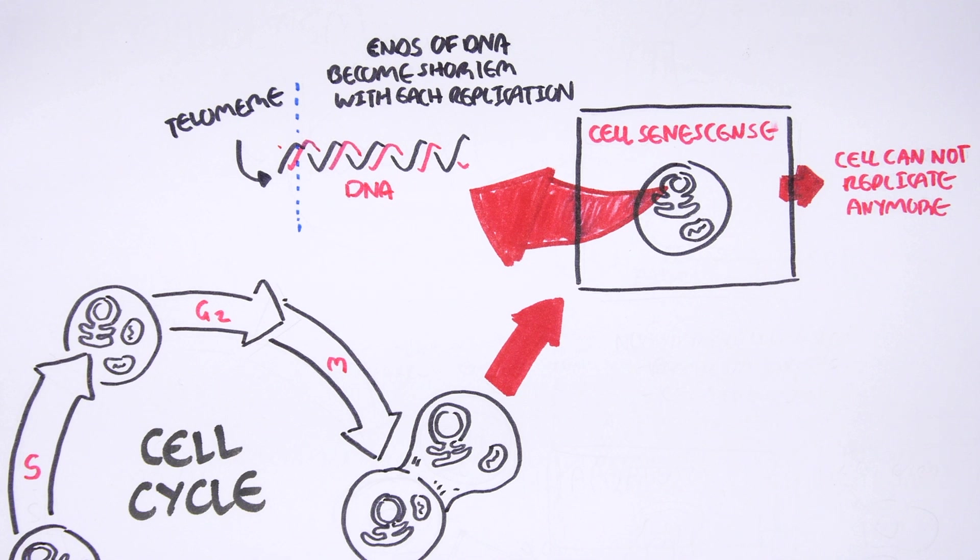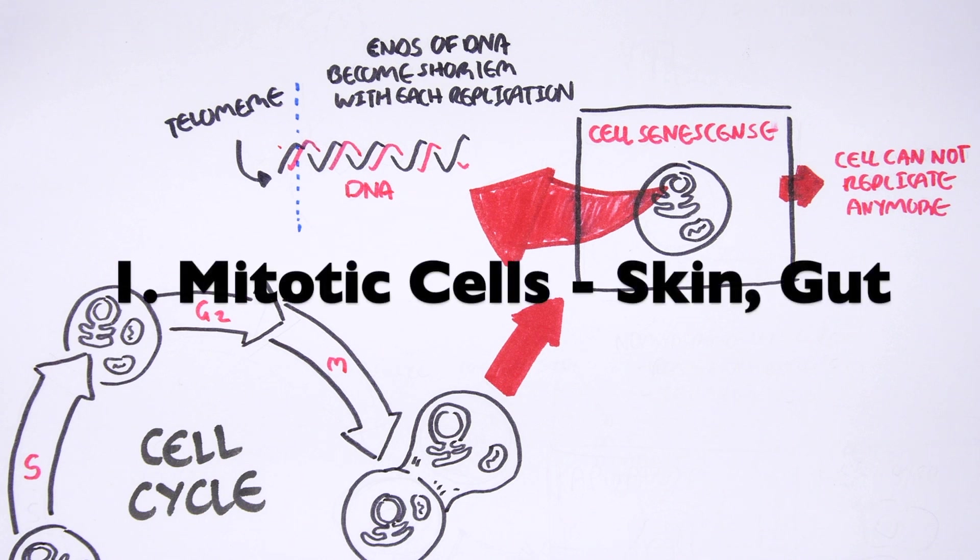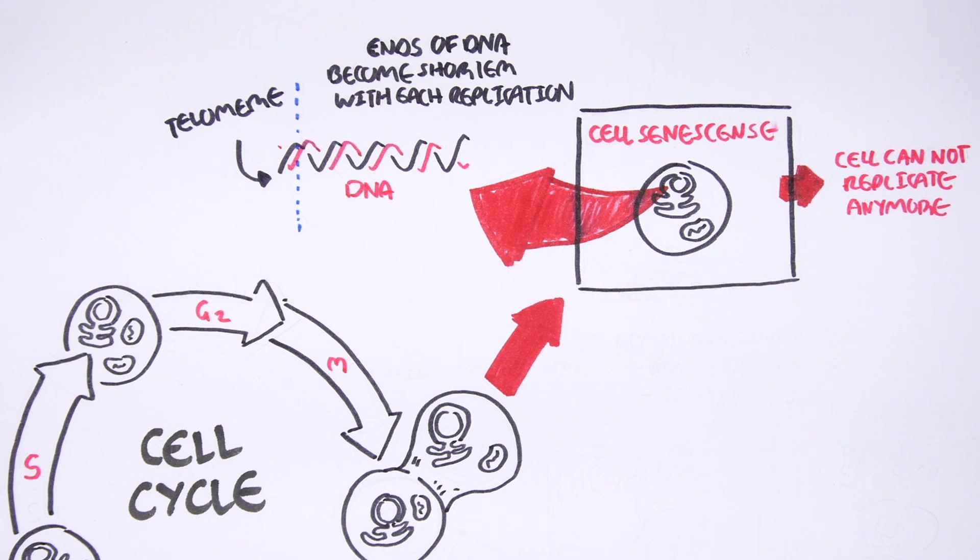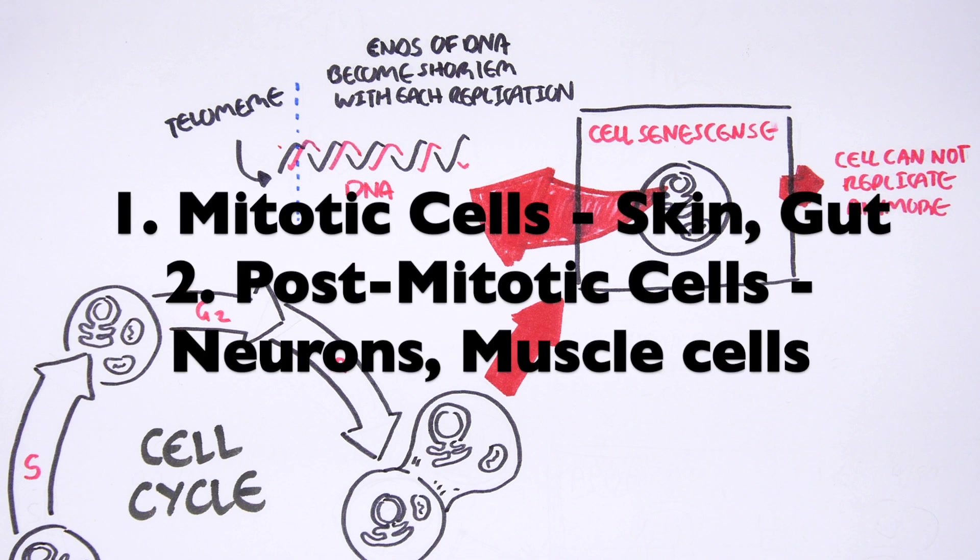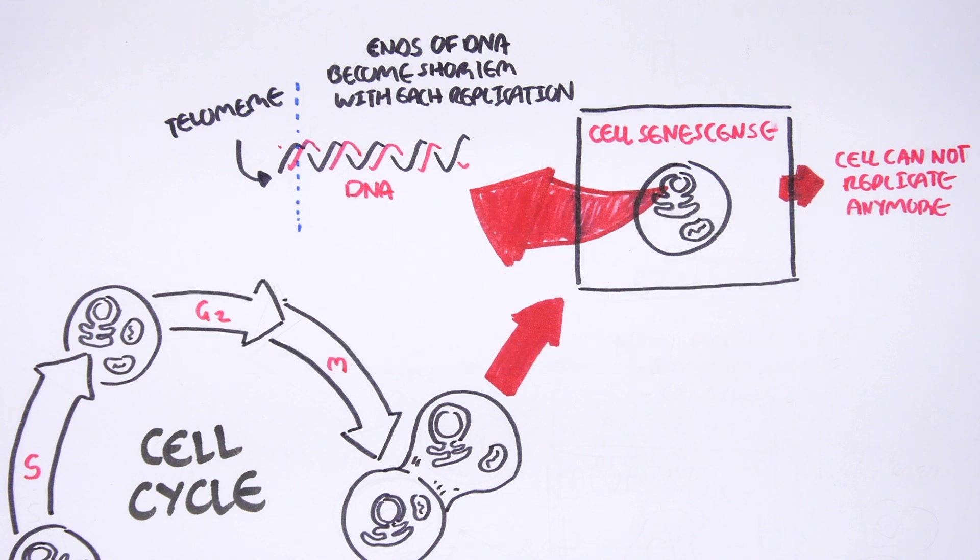Now not all cells are mitotic cells. Remember, mitotic cells are like your skin cells, your gut and intestine cells. But then you have post-mitotic cells which are cells such as your neurons and your muscle cells. These cells cannot enter the cell cycle. Once it's become that type of cell it cannot divide. It just becomes dormant. It will stay in the G0 phase constantly.